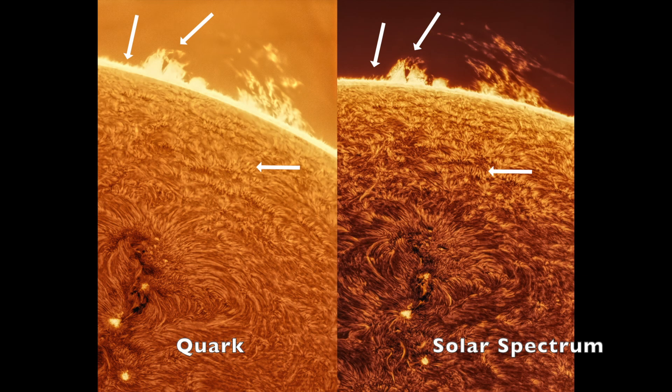Today we're doing a deep dive into solid etalon hydrogen alpha filters. We're going to look at the Daystar Quark Chromosphere and the Solar Spectrum 0.3 angstrom solid etalon. You'll see real images from both systems so you can judge the performance differences for yourself.